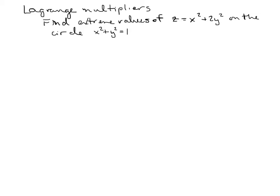The example is to find the extreme values of z equals x squared plus 2y squared on the circle x squared plus y squared equals 1.